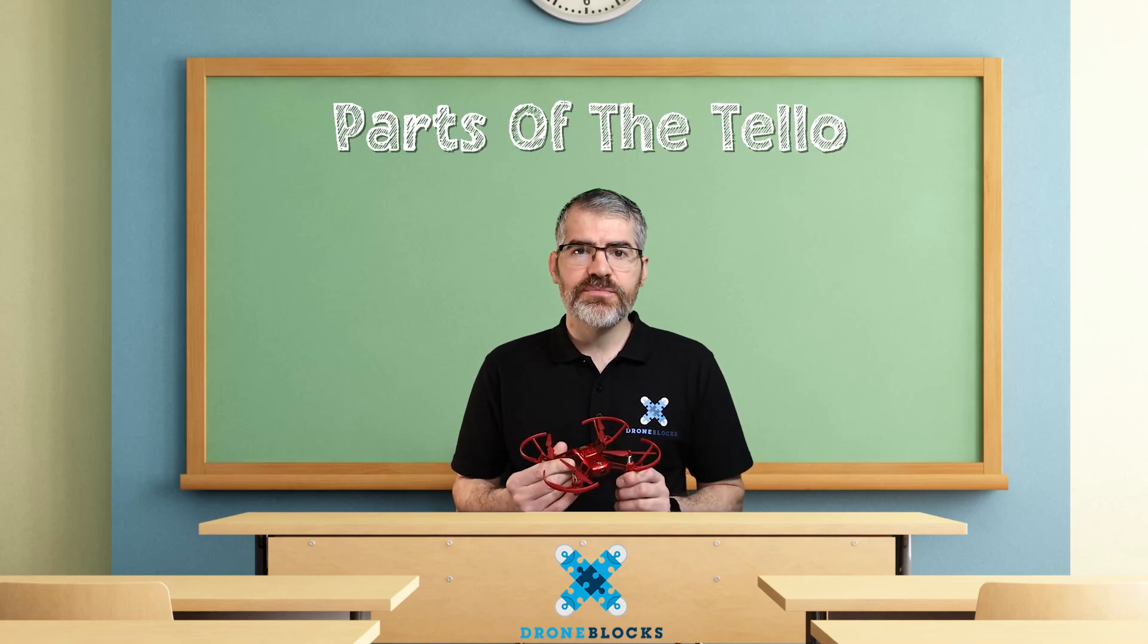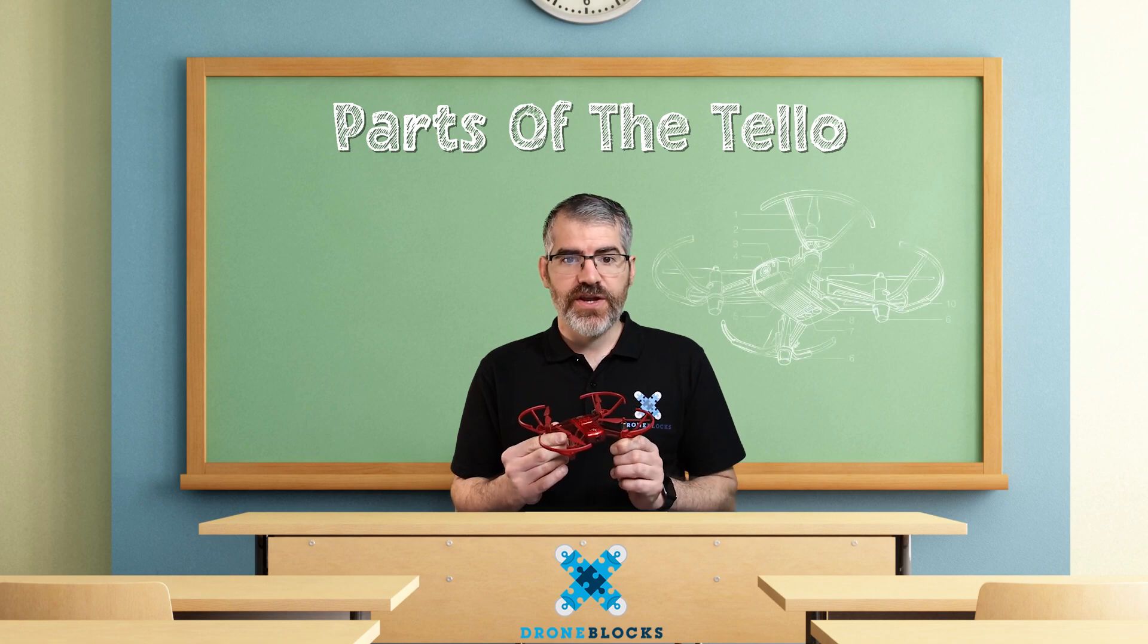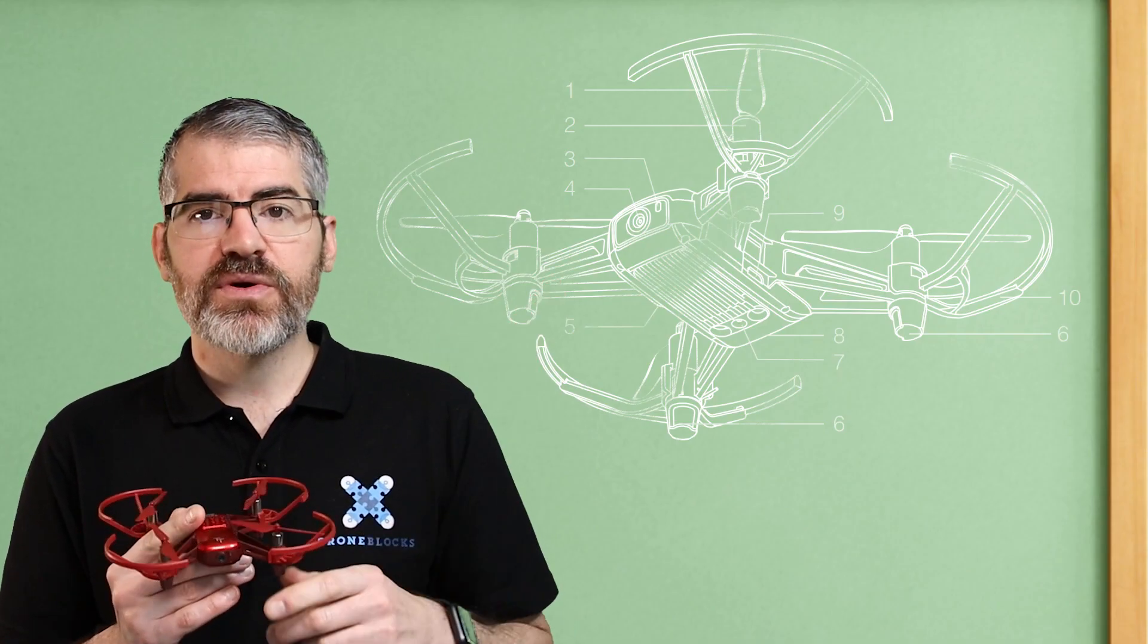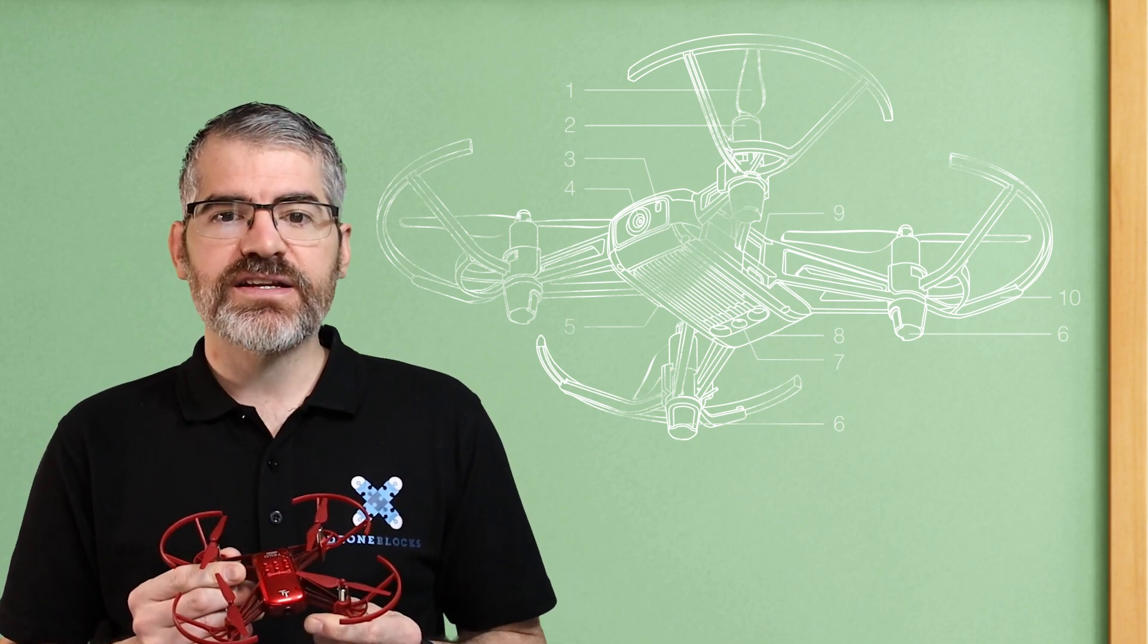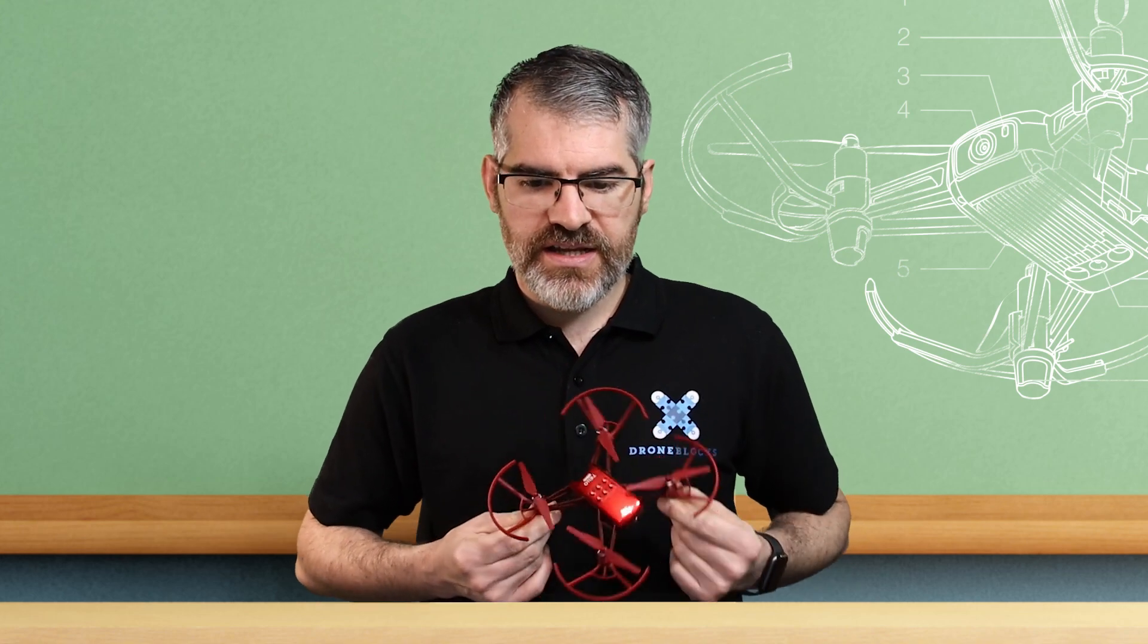The Tello is a very clever machine and I'm going to break down the different parts of the Tello in this video. Over here you can see your diagram and it's labeled 1 through 10. I'm going to identify each one of those on the drone. Now I'm using the red drone because it's easier to see against my shirt but everything I'm about to show you applies to all three drones.